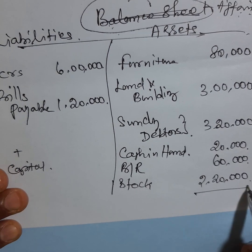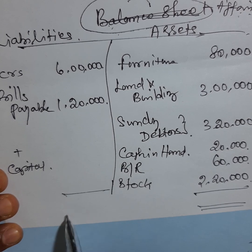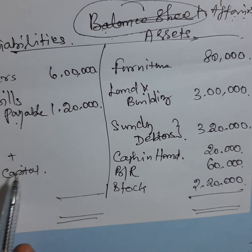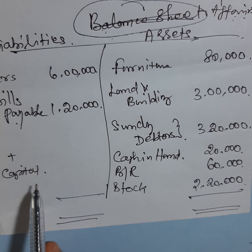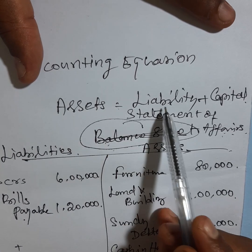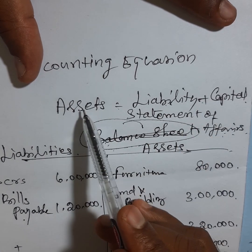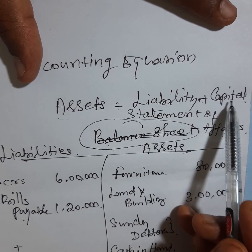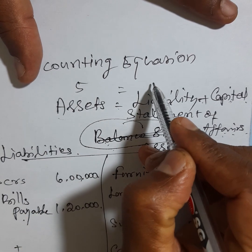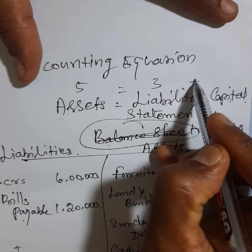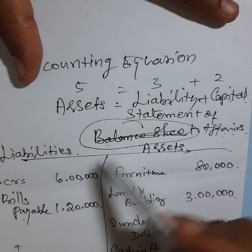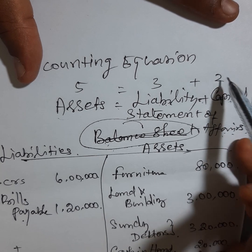If we get the balance, we have the answer to this. So this is assets, this is liabilities. Assets equal liability plus capital. Capital is one of the questions — capital is available as assets minus liabilities. For example, if we have 5, we have 3 plus 2. Then if assets are 5,000 and liability is 3,000, the answer is 2,000. This is very simple.